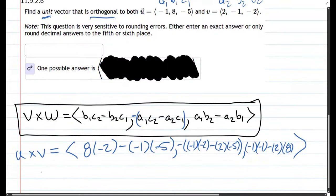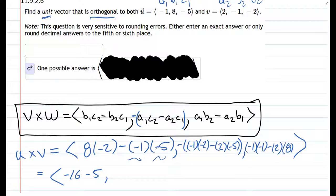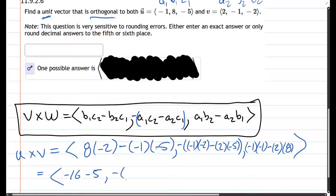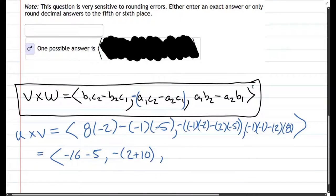Alright, we just need to multiply these numbers. 8 times negative 2 is negative 16. Now we have 3 negatives, so 1 times 5 is 5, but there's 3 negatives, so that product stays negative. Next up is the y coordinate. Negative 1 times negative 2 is positive 2, so we have 2 times negative 5 is negative 10, but we're subtracting that negative 10, so it's plus 10.